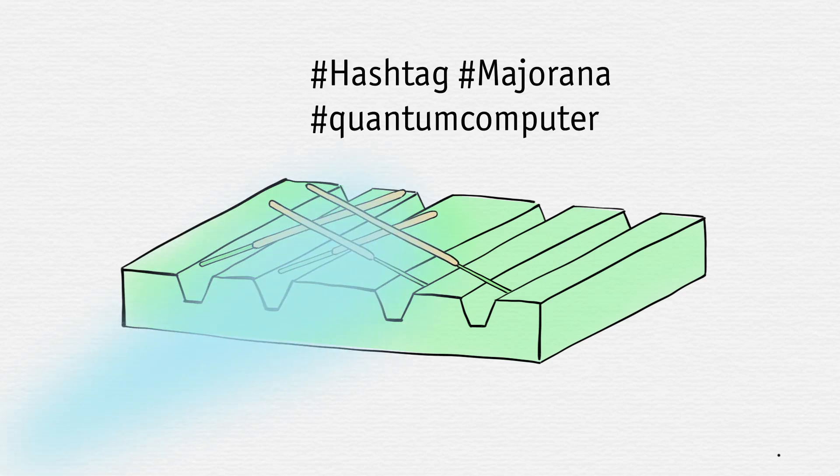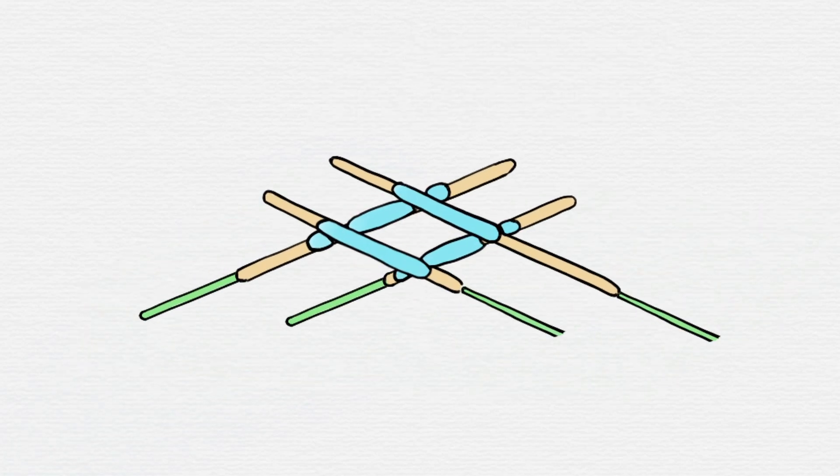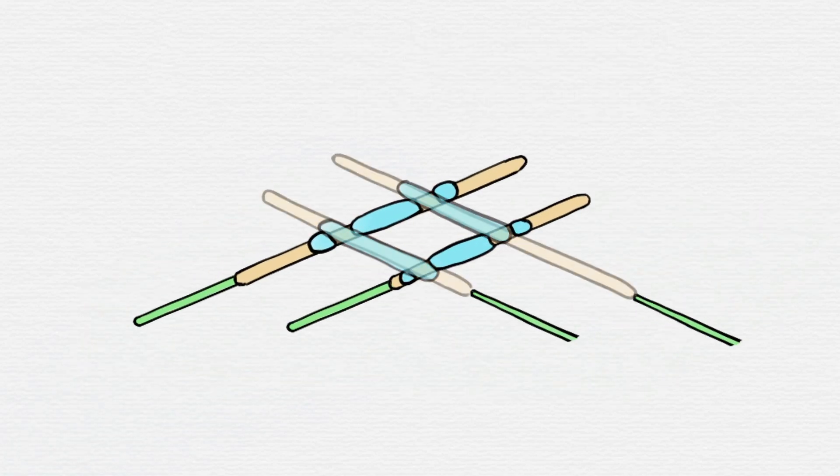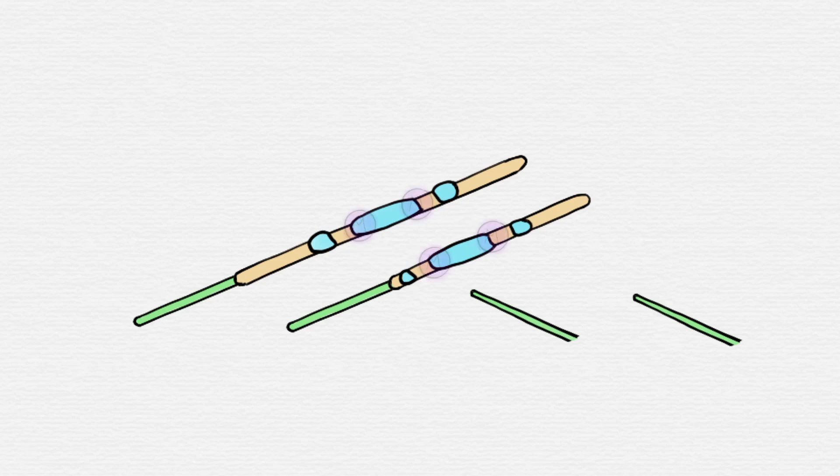Then we gently sprayed the resulting hashtag shapes with aluminum, a superconductor. Spraying the front wire casts a shadow on the back one, so the coating ends right at the crossings. This is where the Majorana can appear, so each hashtag shape can produce four Majoranas.